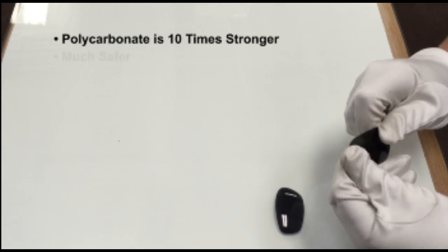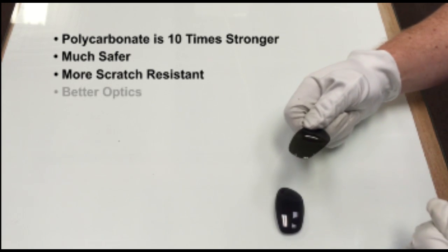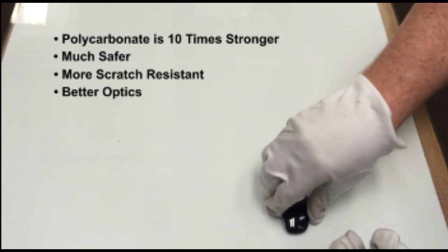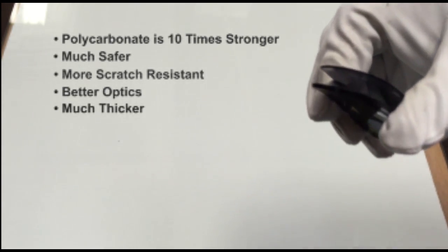Polycarbonate is much safer, much more scratch resistant, and has better optics than the TAC lens. Another thing if you compare is the thickness of these two lenses. You can clearly see how much thinner that TAC lens is.